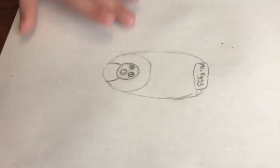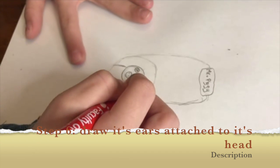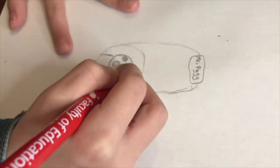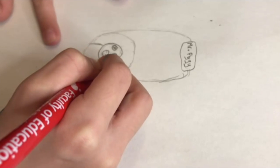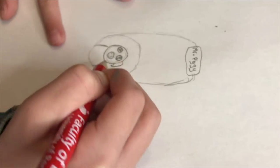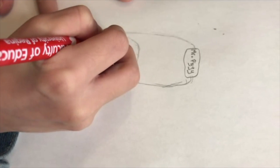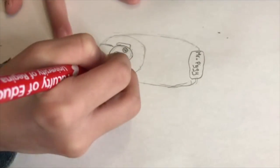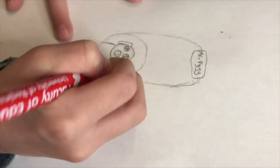So then the next step is you have to make its ears. Step eight, you just have to go out, down, kind of curve it up, and then connect. And do, repeat it twice. Like that.